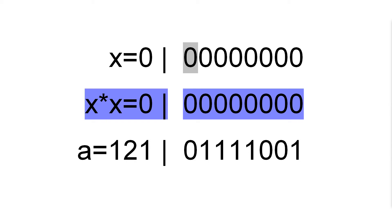That means that we will be setting bits from left to right, and if we overshoot we reset the bit.